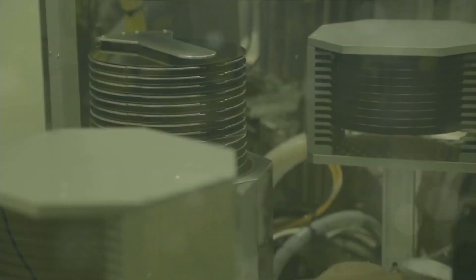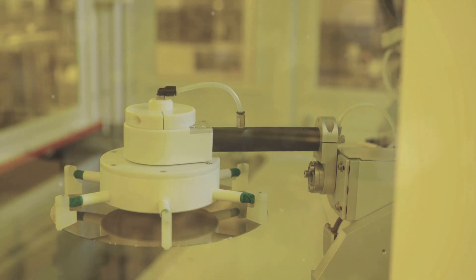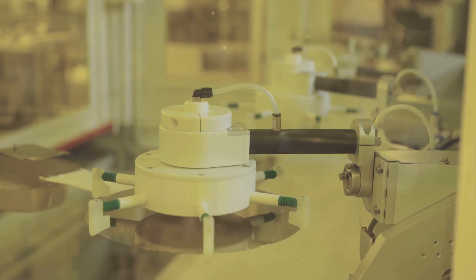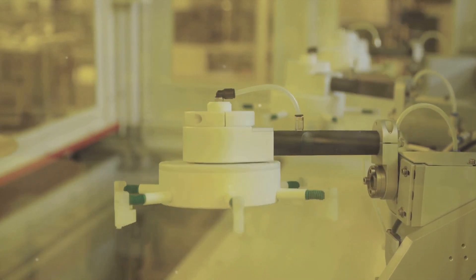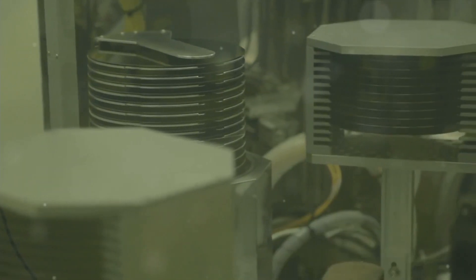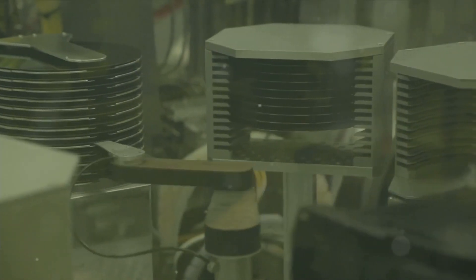Now comes the exciting part, transforming our wafers into solar cells. Imagine our wafer as a blank canvas ready to be transformed into an energy-harnessing powerhouse. This metamorphosis happens in several stages, each bringing us closer to the creation of a fully functional solar cell. First, we begin with the doping process. A little like adding spices to a dish, we introduce impurities to the wafer to alter its properties. Most commonly, we use phosphorus, and this is done at high temperatures. By doing this, we create a PN junction within the wafer.